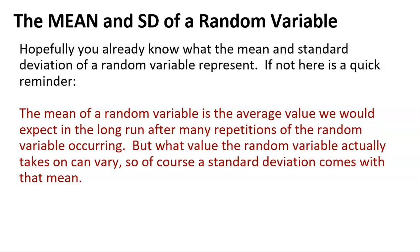First, let's talk about the mean and standard deviation of a random variable. Hopefully, you already know what the mean and standard deviation of a random variable represent. The mean of a random variable is the average value we would expect in the long run after many, many repetitions of the random variable occurring. But what value the random variable actually takes on can vary, so a standard deviation comes with that mean.